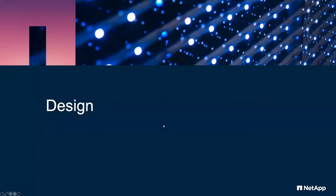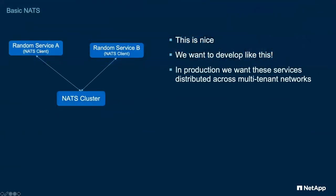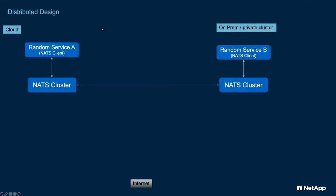Let's jump into the design of the solution we came up with. Your basic NATS environment is where you have some random service that wants to emit and receive NATS messages to a NATS cluster, received by another service. It's a great model. We just wanted to extend it so this works across clusters and across private networks. On the cloud side, imagine a service running up in AWS, Azure, or Google, and you've got something in somebody's house or on a device behind a firewall or in a private cluster, and you want to be able to emit a message and have it magically cross over to be received by some other service, and vice versa.